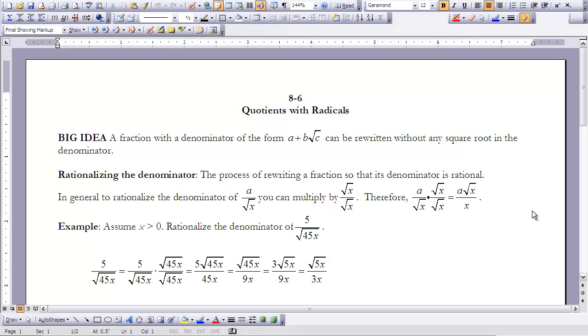Basically what it is doing is rewriting it as a fraction so that the denominator is rational. So in general, to rationalize the denominator of a over the square root of x, we're going to multiply by the square root of x over the square root of x, because the square root of x over the square root of x is really essentially a form of the value of 1.